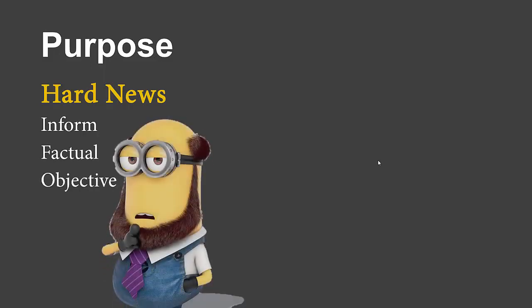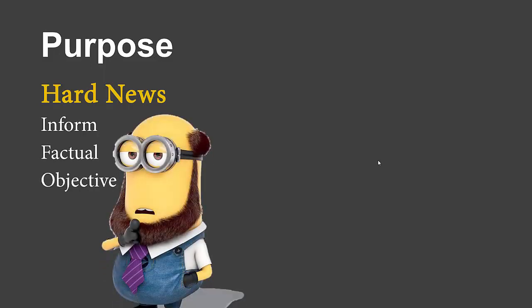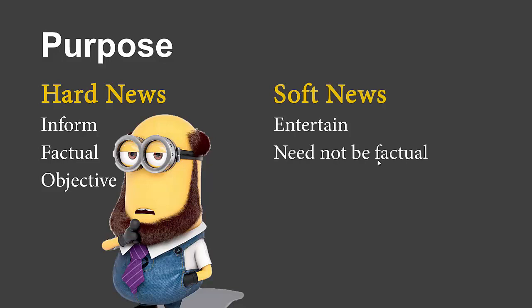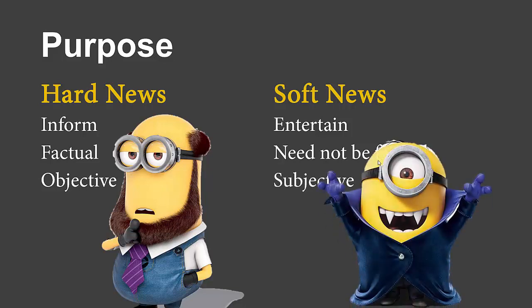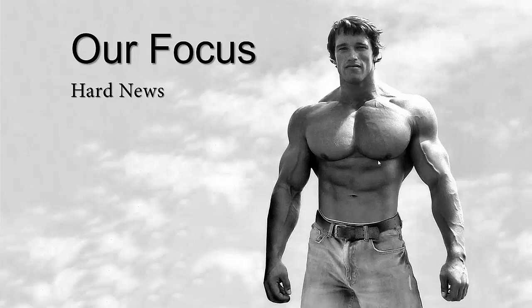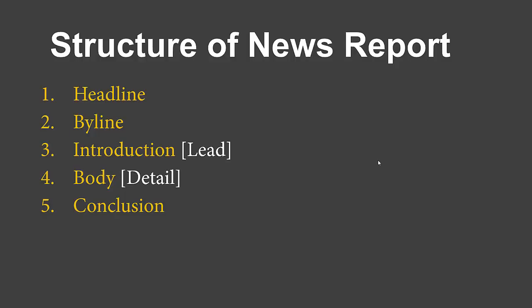The purpose of hard news versus soft news is another way to differentiate between the two. Hard news is meant to inform — it is factual and objective. Soft news, on the contrary, is meant to entertain. It need not be factual and can even be fake, and it is subjective in nature.